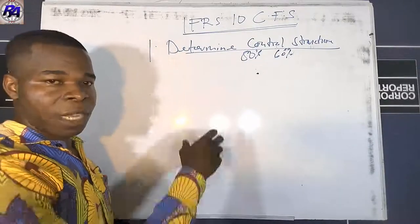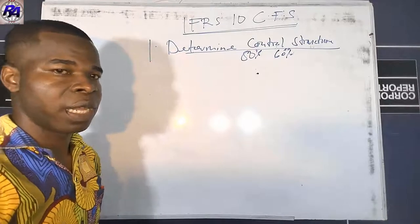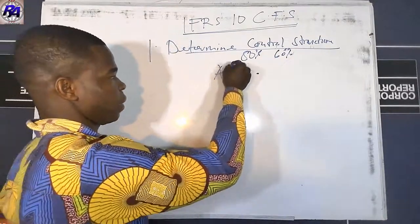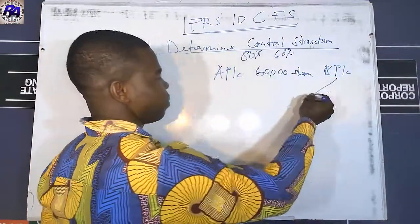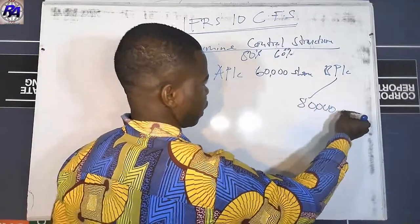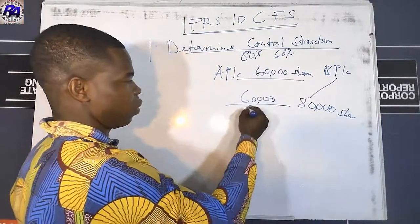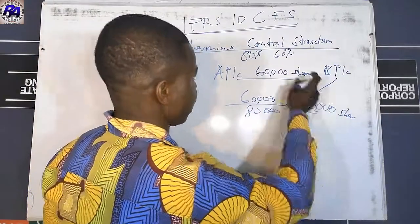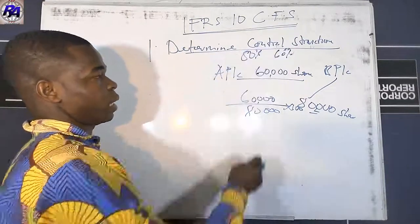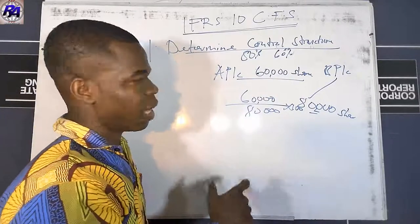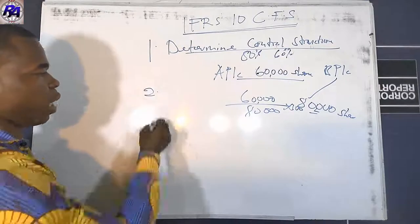To determine control, sometimes questions give you the percentage directly. If not, they give you the number of shares acquired divided by the total shares of the subsidiary multiplied by 100. For example, if A PLC acquires 60,000 shares in B PLC and B PLC has 80,000 total shares, the control percentage is 60,000 ÷ 80,000 × 100.